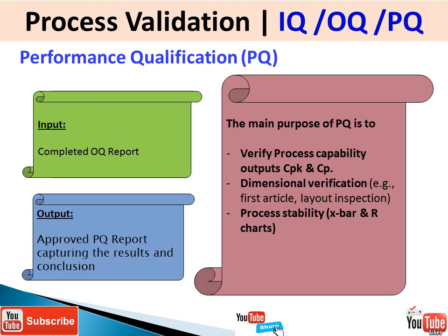For PQ, the input is the completed OQ report, and the output is an approved PQ report capturing the results and conclusions. During PQ, we verify process capability outputs such as Cpk and Cp, perform dimensional verification like first article inspection and layout inspection, and conduct process stability studies using X-bar and R charts.